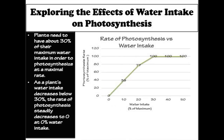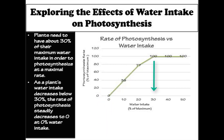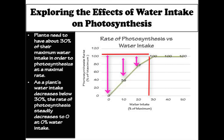When we explore the effects of water intake on photosynthesis, we find that plants need about 30% of their maximum water intake in order to photosynthesize. As a plant's water intake decreases below 30%, the rate of photosynthesis steadily decreases to zero at 0% water intake.